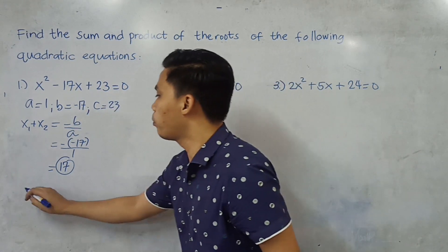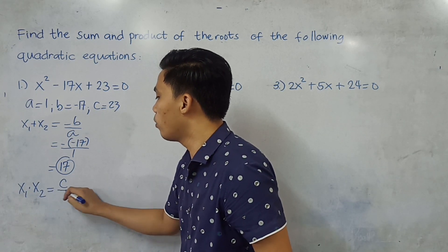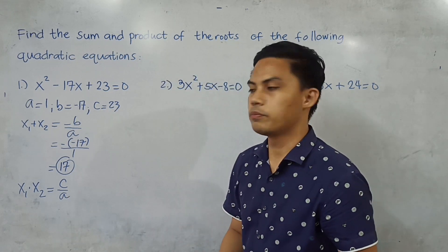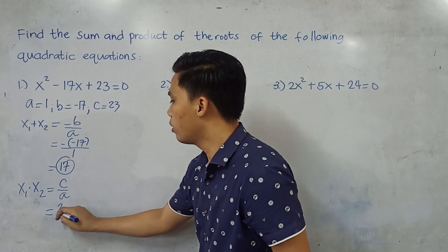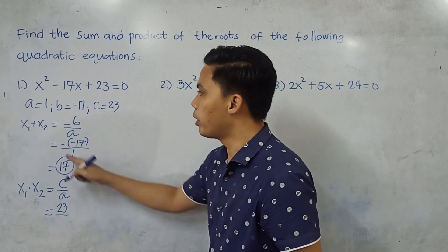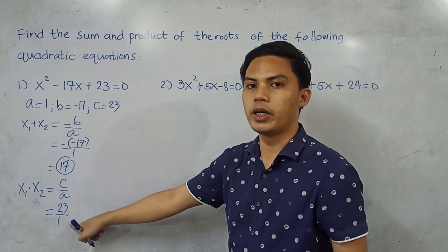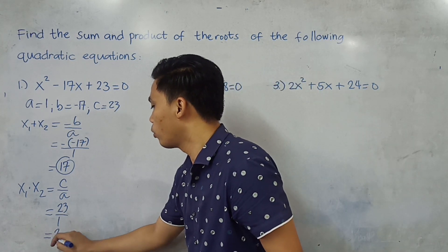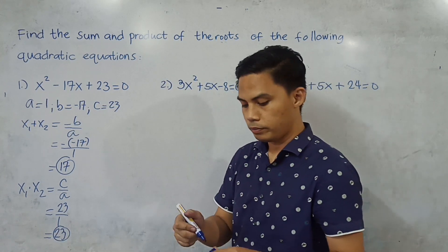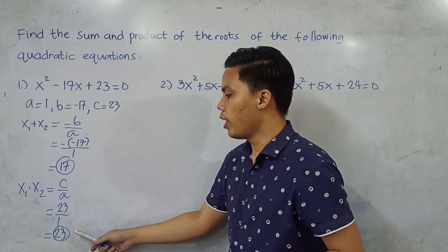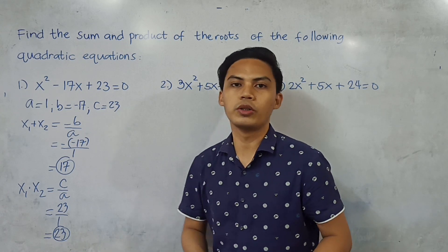Now for the product: x sub 1 times x sub 2 equals C over A, so that is 23 over 1 which equals 23. Therefore, the sum of the roots is 17 and the product of the roots of the given equation is 23.